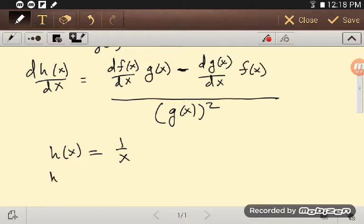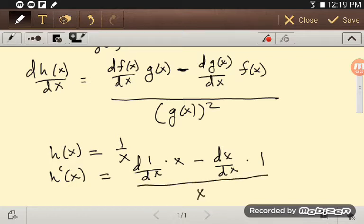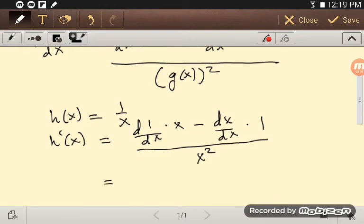And so, if I want h prime of x, I have, just filling everything in, the derivative of 1 with respect to x, which is 0, times x, minus the derivative of x with respect to x, times 1, all divided by x squared, because that's what's on the bottom. And so, when I do that, I get my 0 times x, minus 1, times 1, all over x squared, which is just minus 1 over x squared.